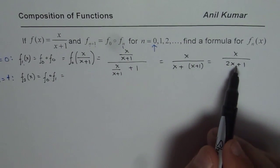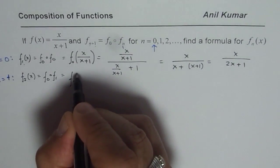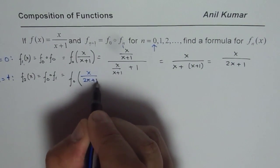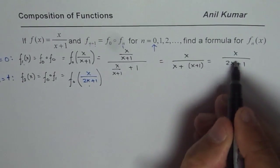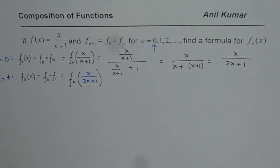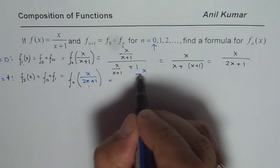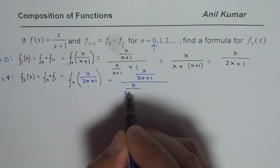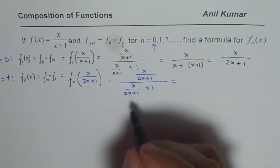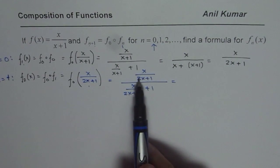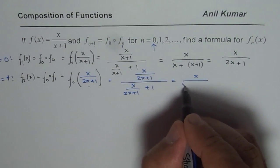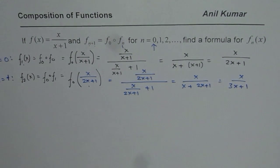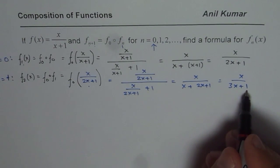What is f of 1? It is what we already calculated: x over 2x plus 1. So we write f of 0 of x over 2x plus 1. Substituting into the original equation, instead of x I write x over 2x plus 1 in the numerator, and x over 2x plus 1 plus 1 in the denominator. Multiplying both numerator and denominator by 2x plus 1, we get x over x plus 2x plus 1, which gives x over 3x plus 1. So f₂ of x equals x over 3x plus 1.